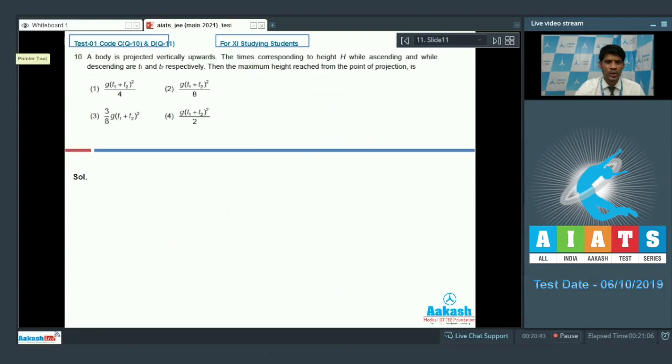Now, let's take on to question number 10. In question number 10, a body is projected vertically upward, the time corresponding to height h while ascending and while descending are t1 and t2 respectively. The maximum height reached from the point of projection is? Again, I am giving you a small explanation. Let's say the particle was projected from here and it falls back again to a particular height here, h it has been said. This is the time t1 it takes and further it is the time t2.